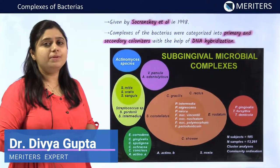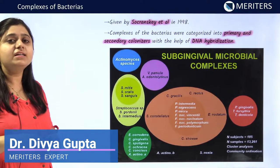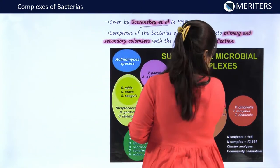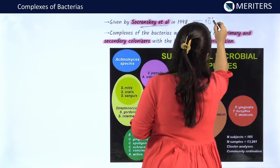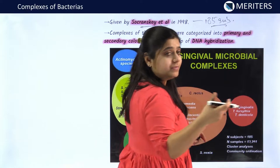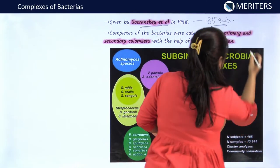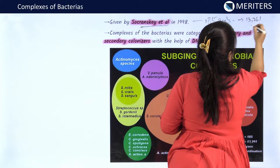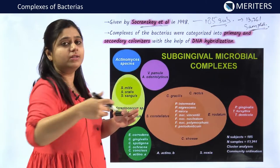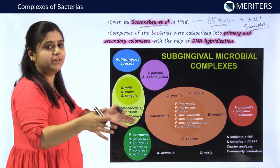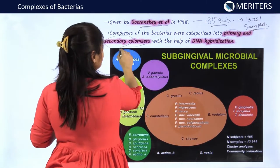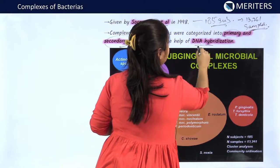Now let us see different microbial complexes of the bacteria found in the oral cavity. In 1998, Socransky et al. did a study on 185 subjects. A total of 13,261 samples were collected from these subjects for noting down the different organisms and dividing them into different complexes. The bacteria were classified as primary colonizers and secondary colonizers with the help of DNA hybridization.